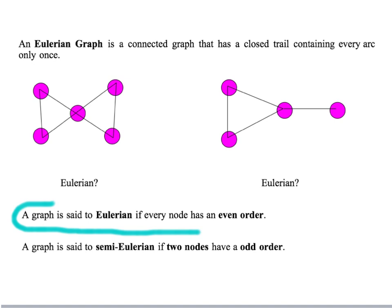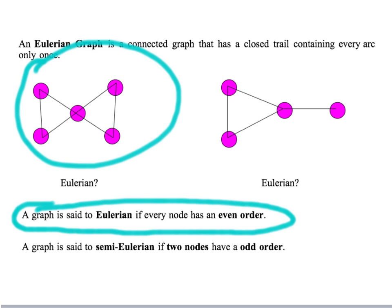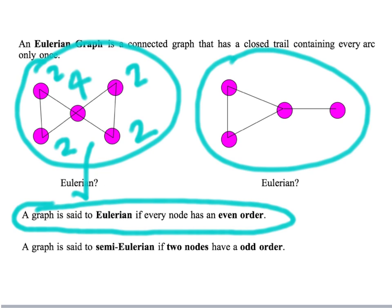A second definition of whether a graph is Eulerian is if every node has an even order. Looking at the left-hand graph, going around the nodes: order two, order two, order four, order two, order two — all even, so that graph is Eulerian. On the right-hand graph the orders are one, three, two, two — not all even, so that graph is not Eulerian.